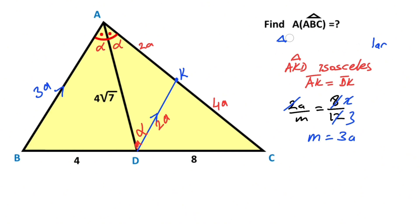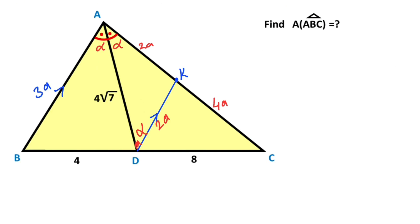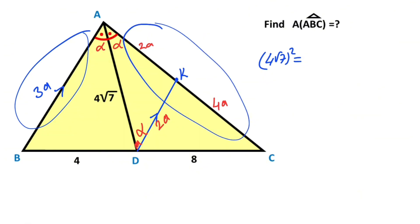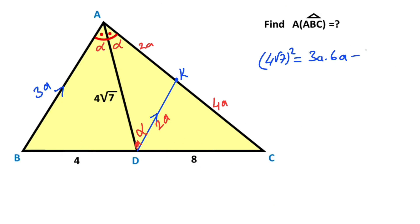After that, notice that we have an angle bisector line here. According to the angle bisector length formula, the square of the length of AD is equal to the product of these two sides — 3a times 6a — minus the product of these two parts, which is 4a times 2a.